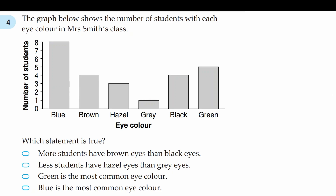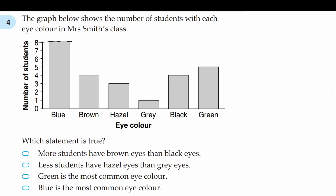The third statement says that green is the most common eye colour. We can see that five people have green eyes compared to the eight people who have blue eyes, so that is also not the correct answer. And finally the fourth statement, which we know must be correct, says that blue is the most common eye colour. Eight people have blue eyes, which means that is indeed the correct answer.